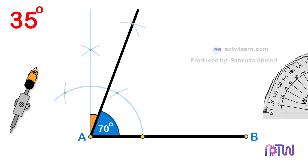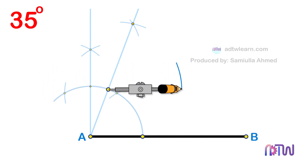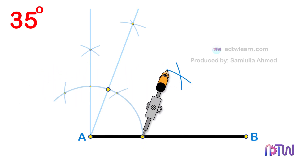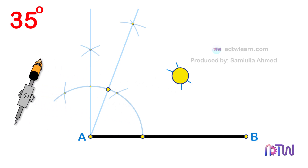Since a 35 degree angle is half of the 70 degree angle, we need to divide the 70 degree angle in half. To divide this 70 degrees in half, use these two points as centers and cut arcs as shown. Draw a line passing through this intersection point from endpoint A of the line segment.